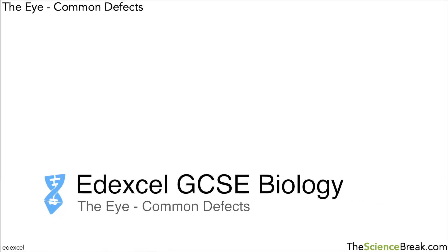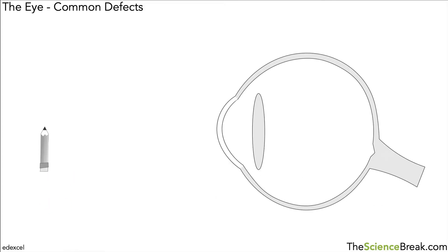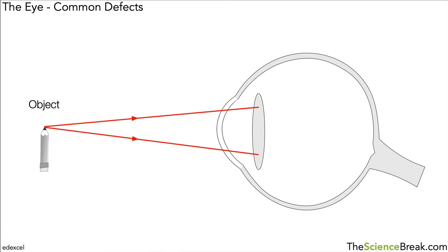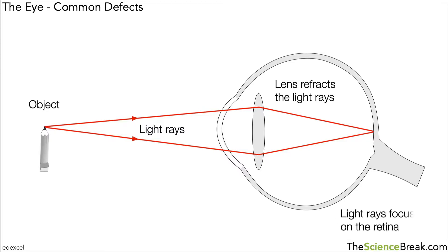Today we're going to look at the eye and the common defects that might affect eyesight. Here we have a simple version of the eye, with a pencil as an object. Light rays come off the pencil and are refracted slightly by the cornea but mostly by the lens. The light rays then change direction and meet at a point just at the retina. An impulse is sent down the optic nerve and an image is formed in the brain. That's under normal circumstances.